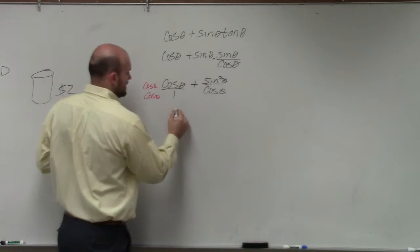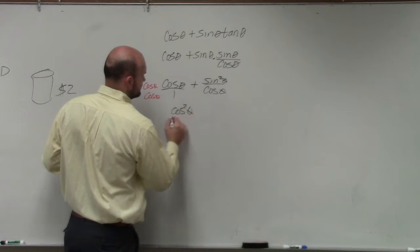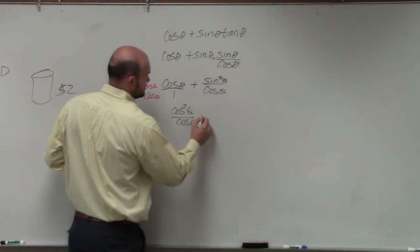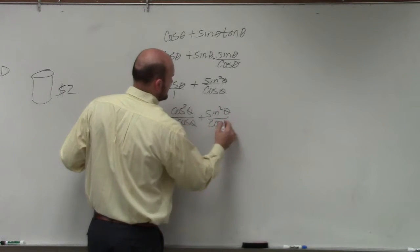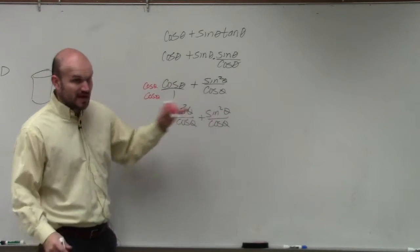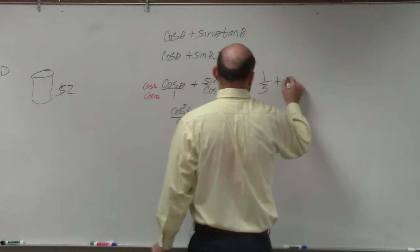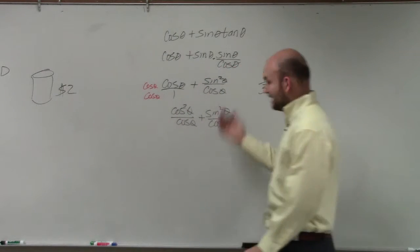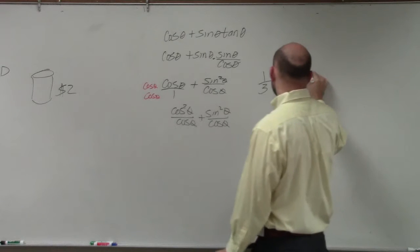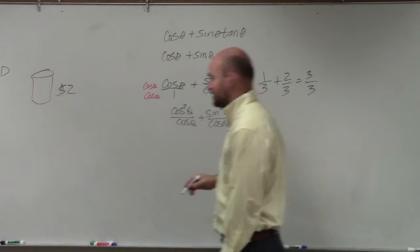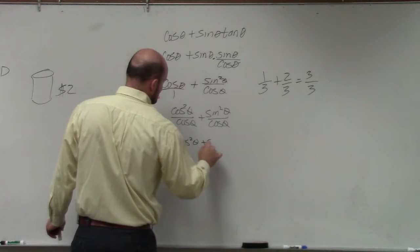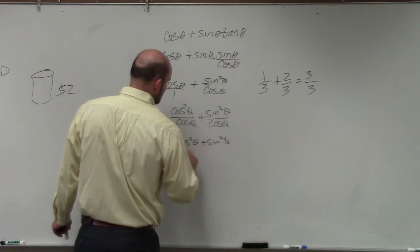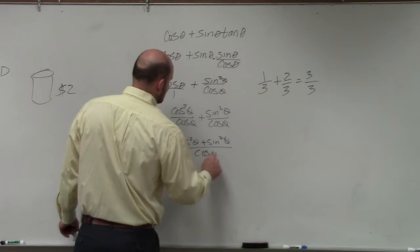When doing that, I get cosine squared of theta over cosine of theta plus sine squared of theta over cosine theta. Now my two fractions have the same denominator, so it's just like this. When they have the same denominators, you just add the numerators. Keep the denominator the same. So I have cosine squared of theta plus sine squared of theta all over cosine of theta.